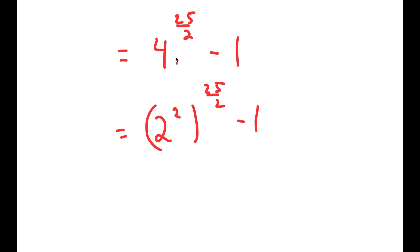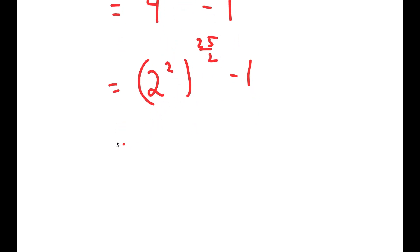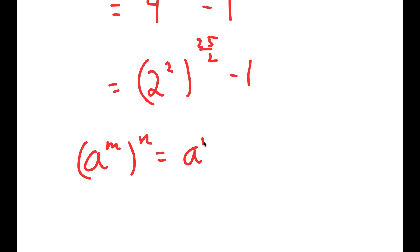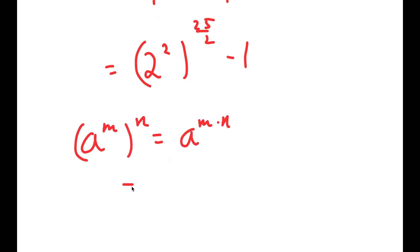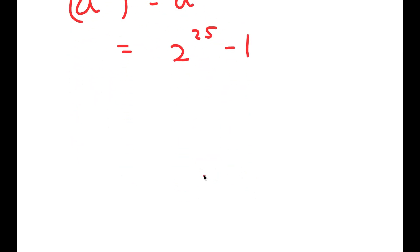All I'm doing is rewriting 4 as 2 squared. Now from here, if I have something in the form a to the power of m to the power of n, this is equal to a to the power of m times n. These two cancel out, giving 2 to the power of 25 minus 1.